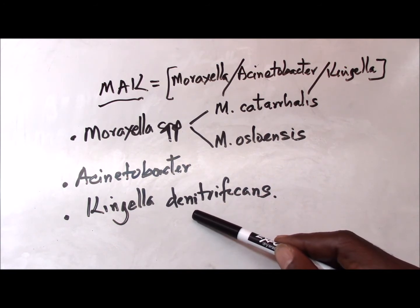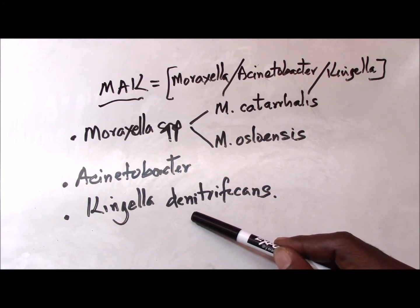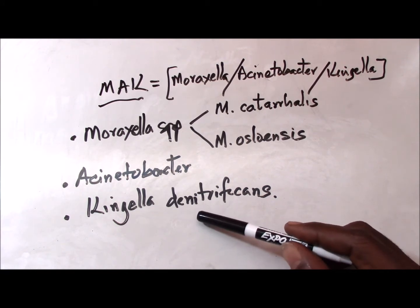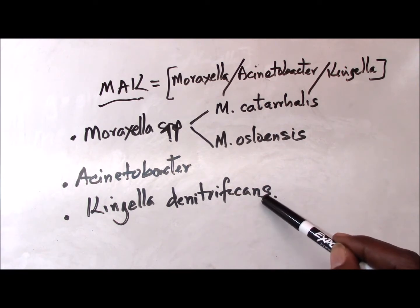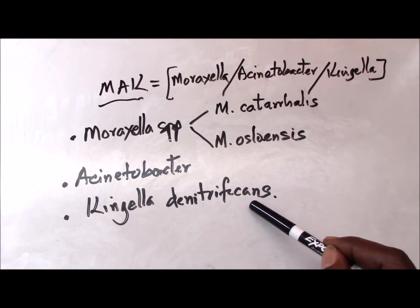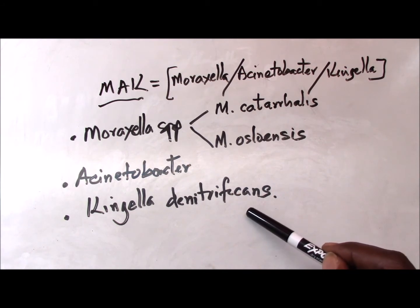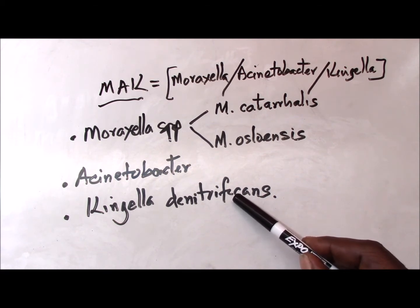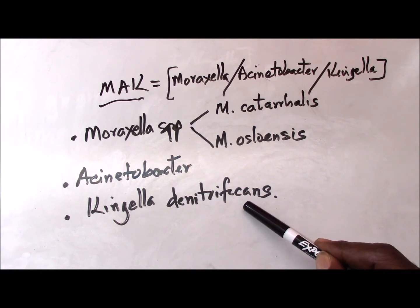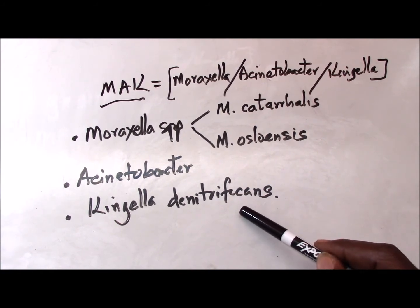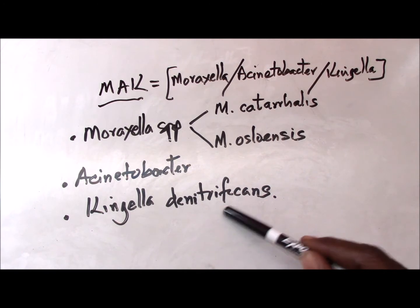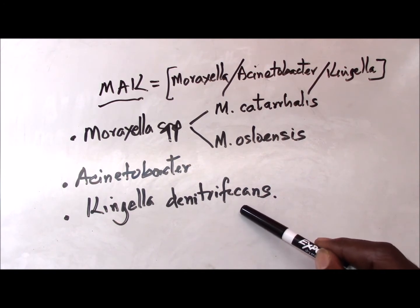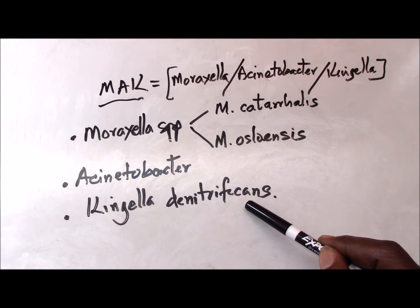Kingella can stain as somewhat short, plump coccobacilli with a tendency to have squared ends, and may form a small colony. It also has the ability to grow on Thayer-Martin agar, and therefore may be mistaken for Neisseria gonorrhoeae on microscopic examination. Fortunately, K. denitrificans can reduce nitrate, unlike the gonococcus.